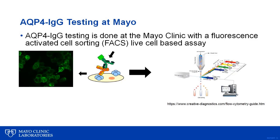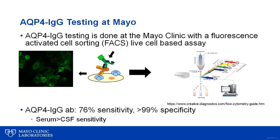Aquaporin-4 antibody testing is done at the Mayo Clinic with a fluorescence-activated cell-sorting FACS cell-based assay, which remains the gold standard in terms of sensitivity and specificity. HEC-293 cells are transiently transfected with aquaporin-4 and a GFP marker. These cells are then exposed to human serum samples. Samples with the aquaporin-4 antibody will bind to the aquaporin-4 transfected HEC-293 cells, detected by flow cytometry using an IgG1-specific secondary antibody conjugated to AlexaFluor-647 fluorescence dye.